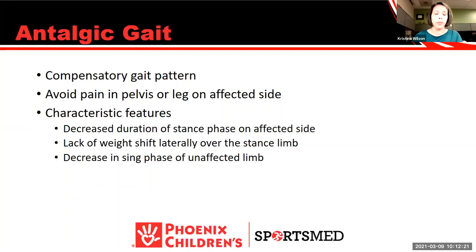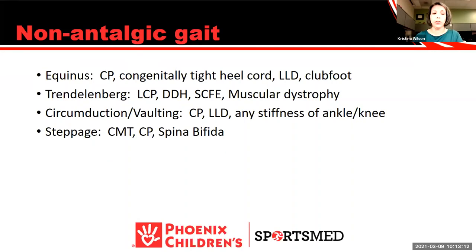The most common gait we'll see in a sports medicine or musculoskeletal clinic is an antalgic gait — a compensatory gait pattern due to pain, typically from the pelvis or leg on the affected side. Characteristic features include decreased duration of the stance phase (the patient tries to avoid weight on the affected leg), a lack of lateral weight shift over the stance limb, and a decrease in the swing phase of the unaffected limb. Non-antalgic gait patterns include: an equinus gait more commonly seen with CP or leg length discrepancy; Trendelenburg gait, common with Legg-Calvé-Perthes, DDH, and SCFE; circumduction or vaulting gait, most commonly seen with leg length discrepancies; and steppage gait, seen with Charcot-Marie-Tooth, cerebral palsy, and spina bifida.